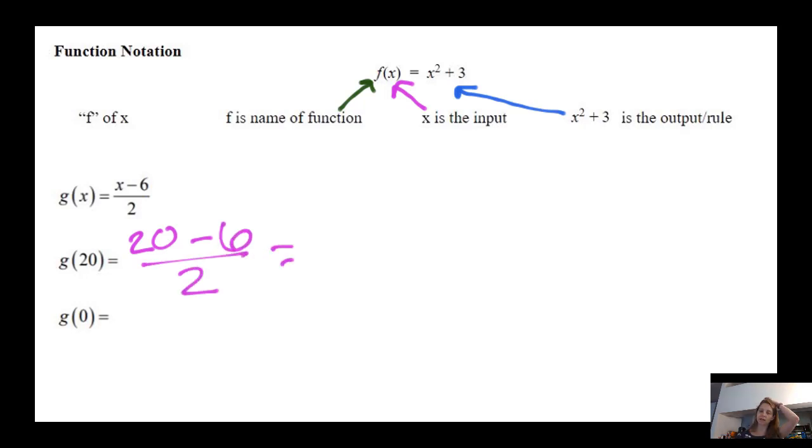And then we're going to simplify or evaluate. So 20 minus six is 14. 14 divided by two is seven. So I could write the answer of G of 20 is seven. And function G, when the input is 20, the output is seven.